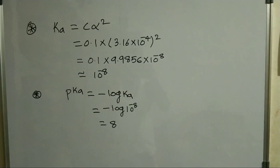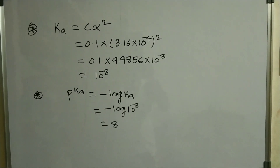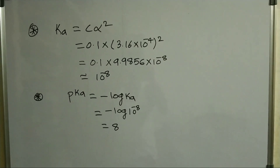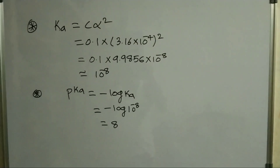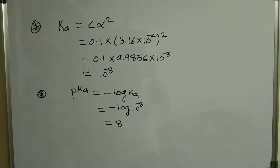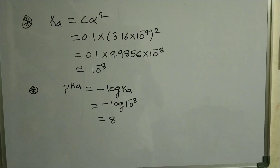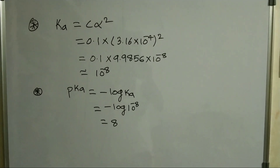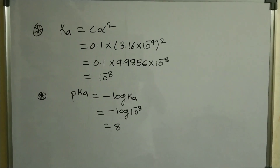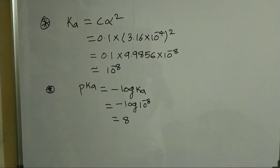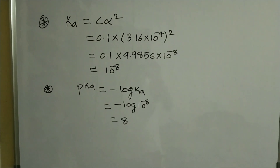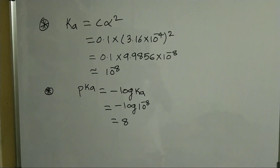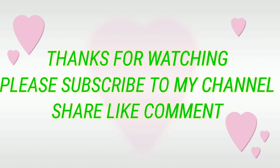Ka = Cα² = 0.1 × (3.16 × 10⁻⁴)² = 0.1 × 9.9856 × 10⁻⁸ ≈ 10⁻⁸. Therefore, pKa = −log(Ka) = −log(10⁻⁸) = 8. The answer for pKa is 8.